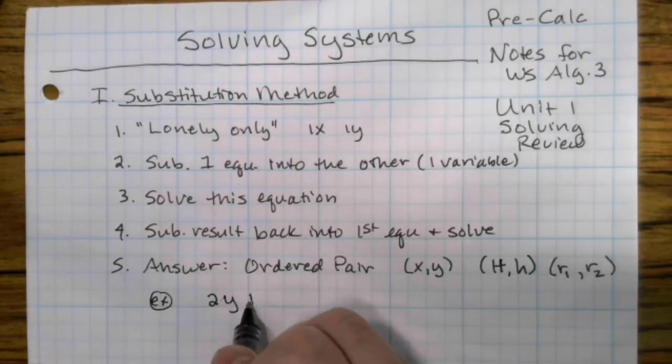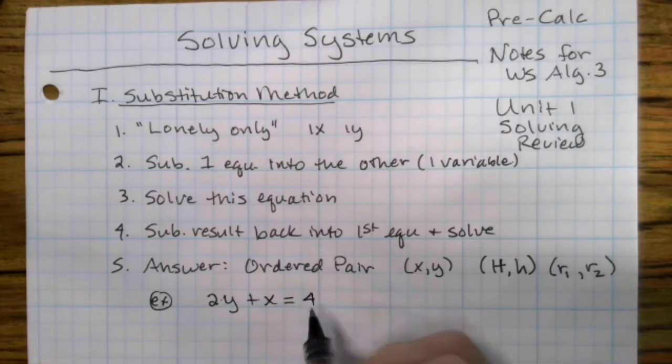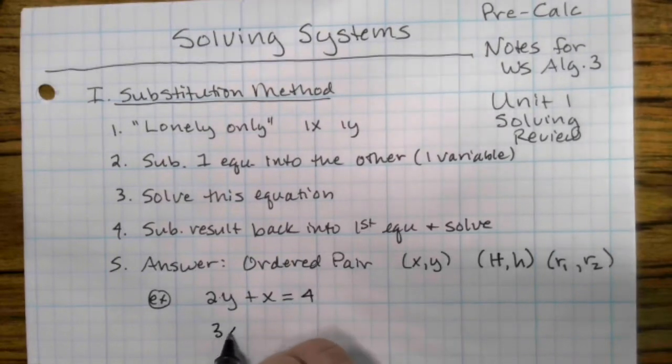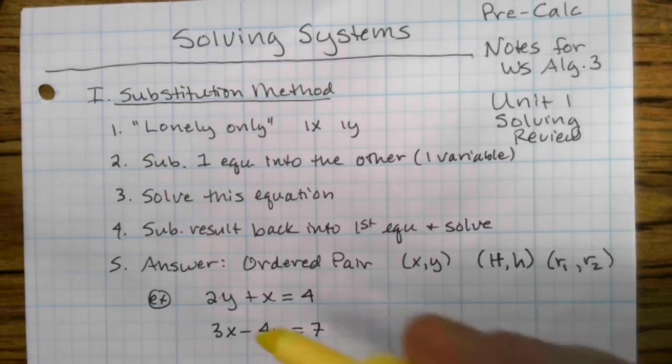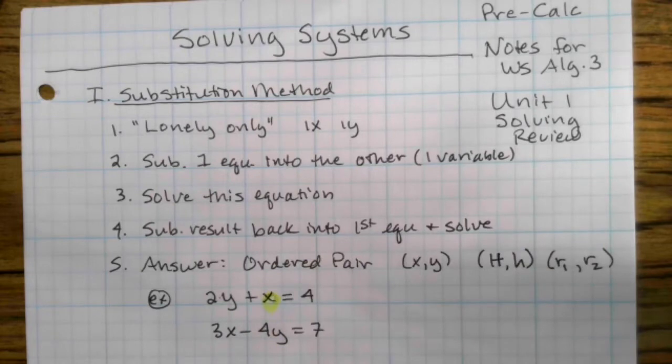Here's our equation. 2y plus x equals 4, 3x minus 4y equals 7. Now this is an ideal equation for substitution method because we have our lonely only right there. That's a 1x.